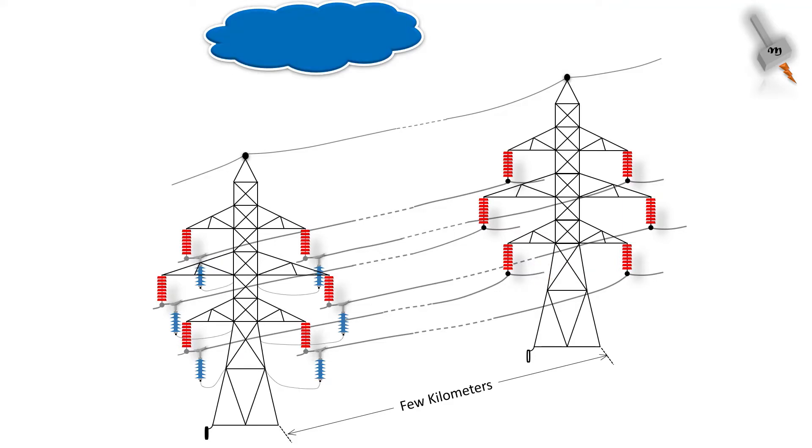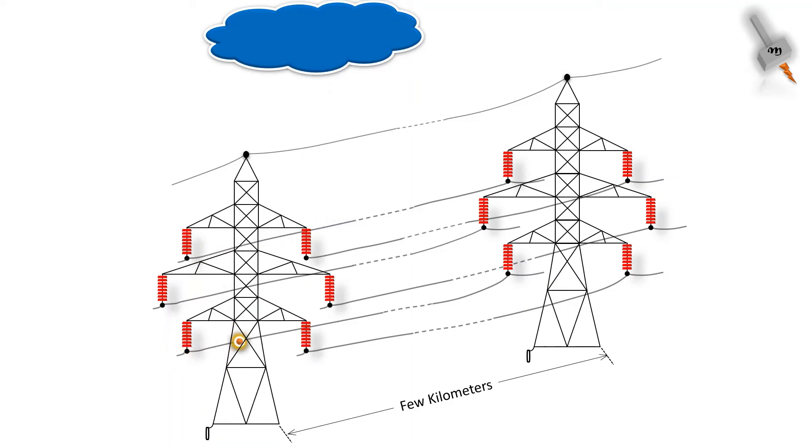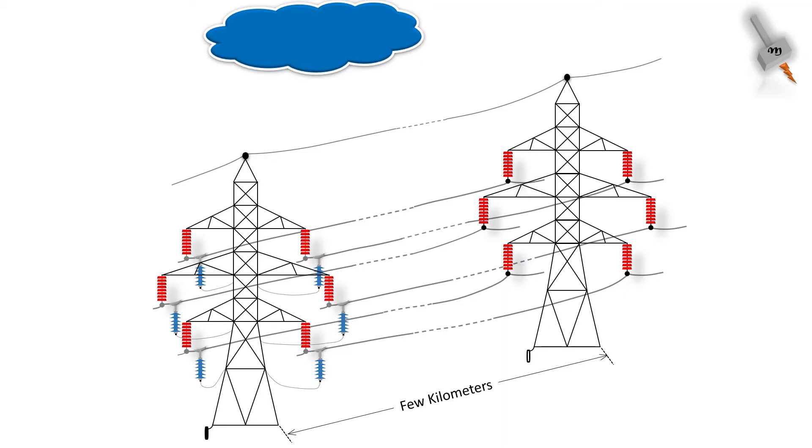In certain remote cases, the lightning strike might hit the conductor directly. In that situation again, surge will travel in both directions. There might be a situation where subsequent tower has a lightning arrester and the surge gets grounded. If there are no lightning arrester, then the travelling wave may cause a flashover in some other insulator. The lightning arrester have to be strategically placed based on detailed analysis. Positioning of lightning arrester on a transmission tower is a matter of another video.